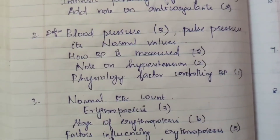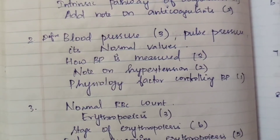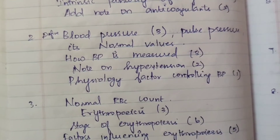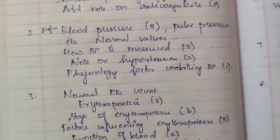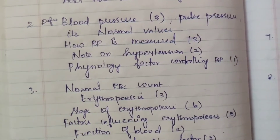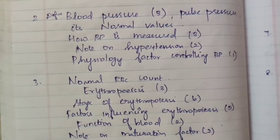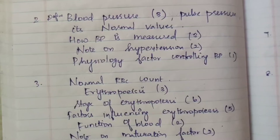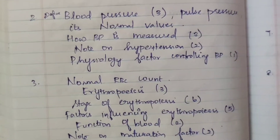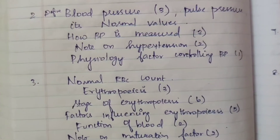Second question: define blood pressure and pulse pressure and their normal values. How is BP measured? Note on hypertension — this is 15 marks. Blood pressure appears three times at 15 marks. How BP is measured appears three times. Note on hypertension appears two times. Physiological factors controlling BP appear at both 15 marks and 5 marks. If you have the BP topic covered, you are well prepared.